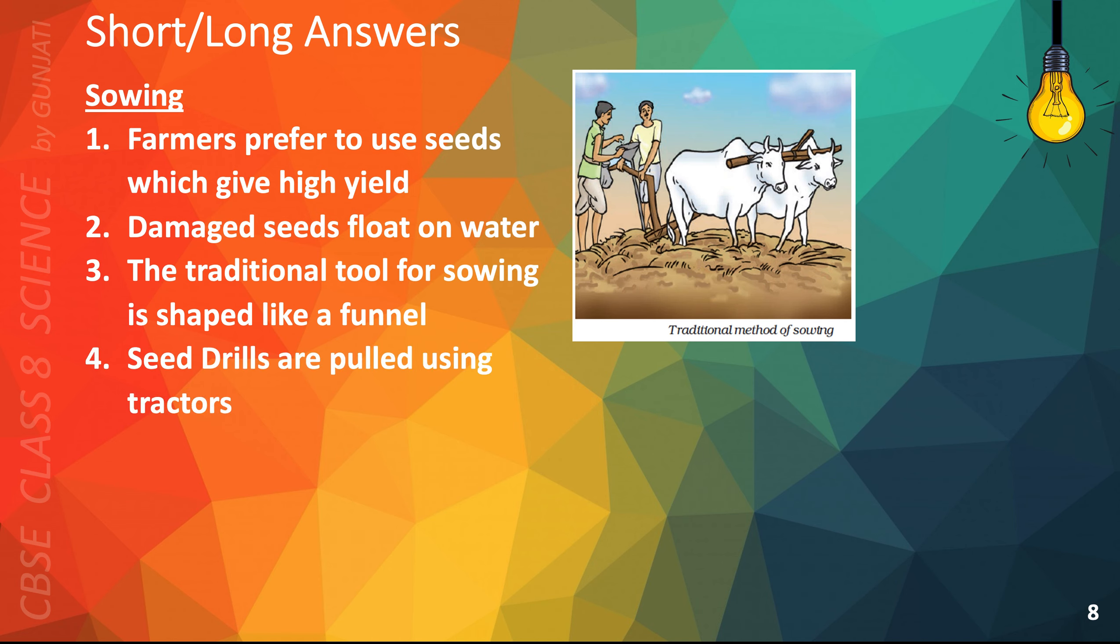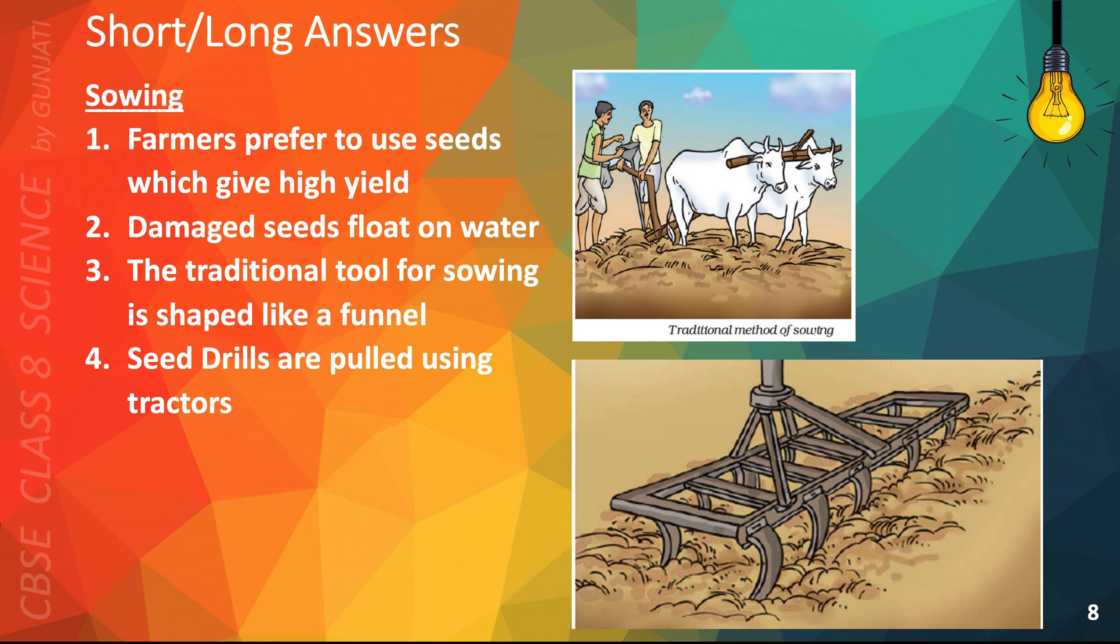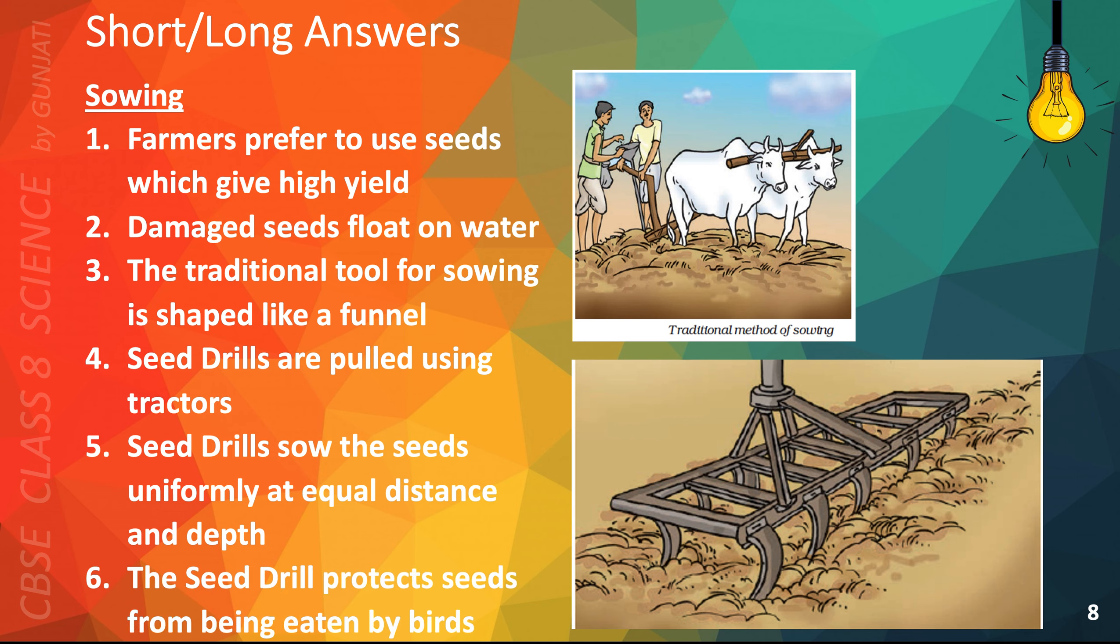Seed drills are pulled using tractors. Seed drills sow the seeds uniformly at equal distance and depth. The seed drill protects seeds from being eaten by birds.